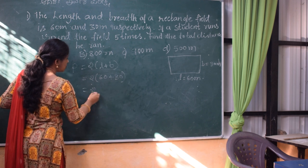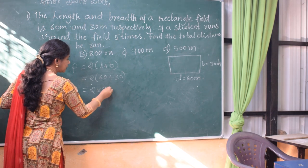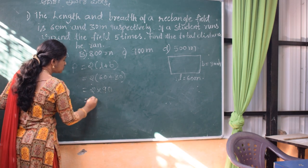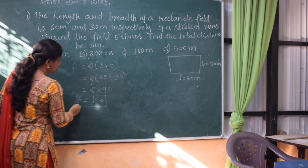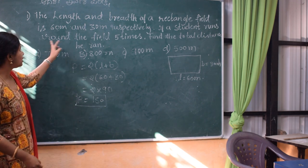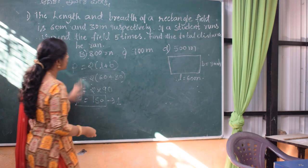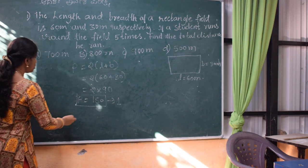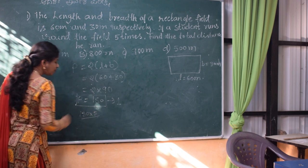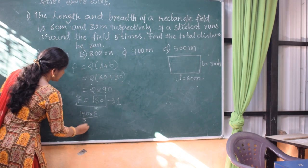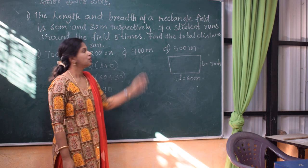So 60 plus 30 is 90, and 2 times 90 is 180. So the perimeter of the rectangle is 180 meters, which equals 1 round. For 5 rounds, we calculate 180 into 5, which gives 900 meters. So the answer is option C, 900 meters.